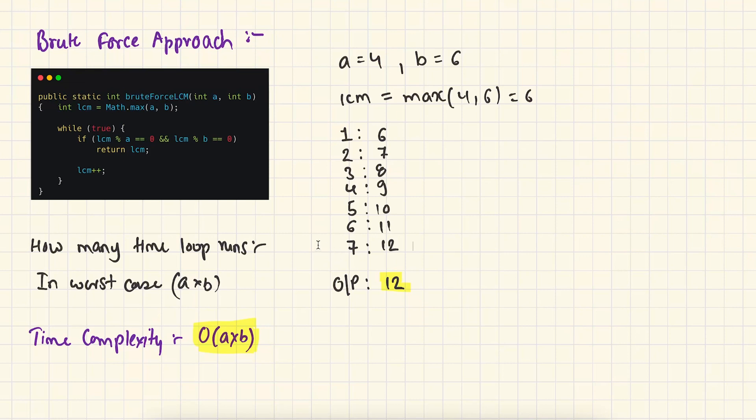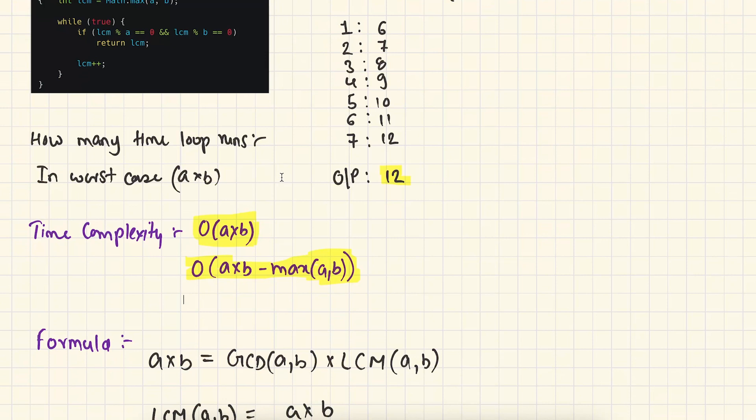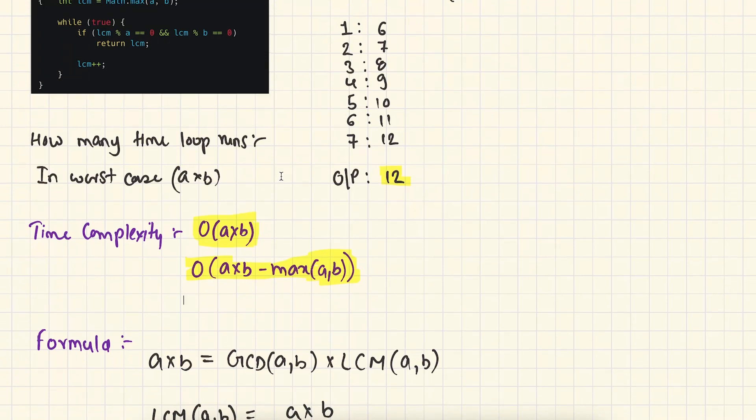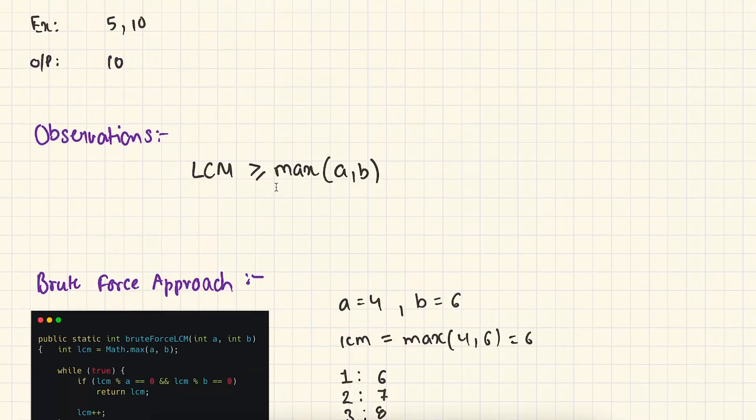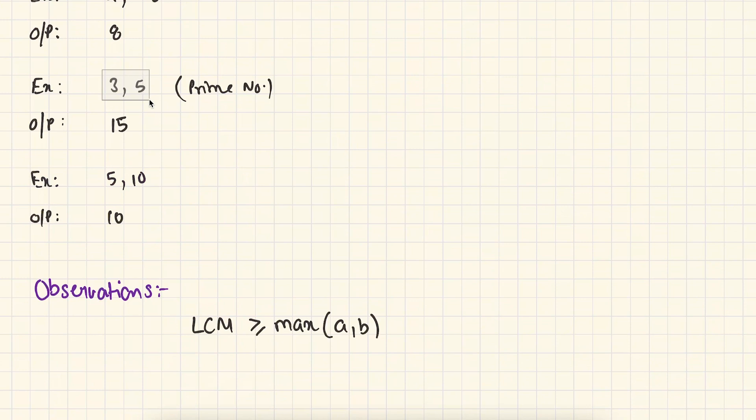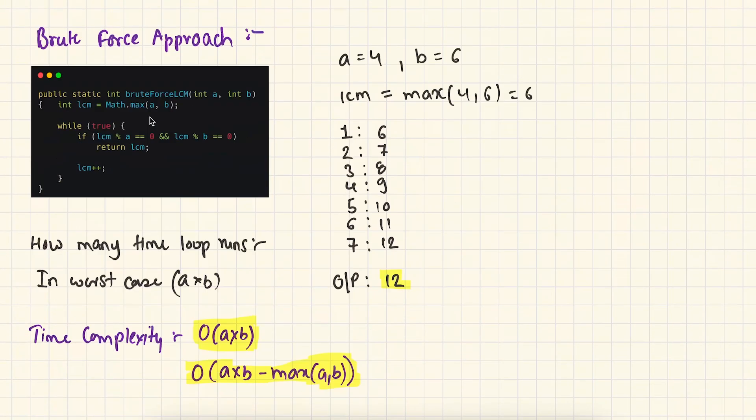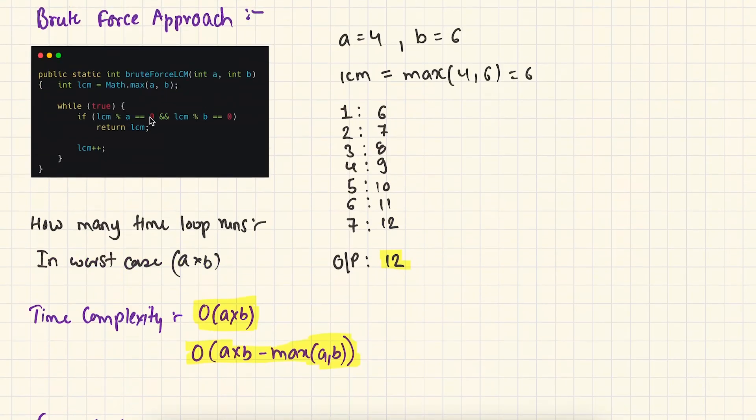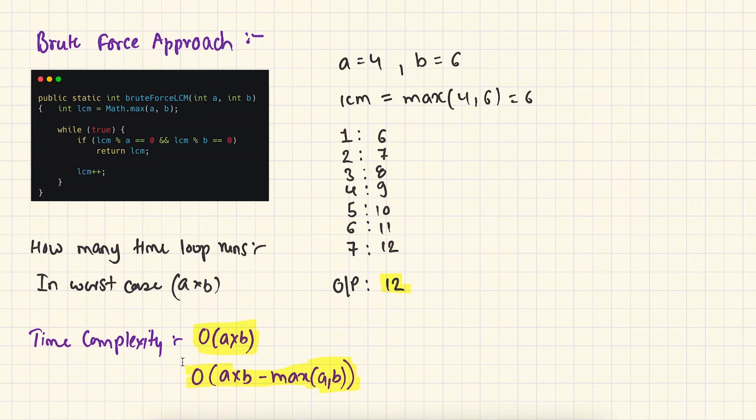Let's see the time complexity of this function. How many times is our loop going to run? In worst case, our loop is going to run A times B. If you go more precisely, then our loop is going to run A times B minus max of A, B times. We can see here in this example, in case of 3 and 5, our loop is going to run from 5 to 15. It means 3 times 5 is 15 minus 5 is 10 times. So in this case, our loop is going to run 10 times. That's why the time complexity of this function is going to be O(A times B minus max of A and B).